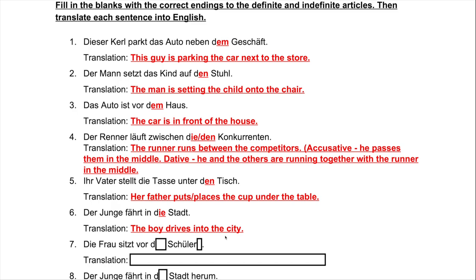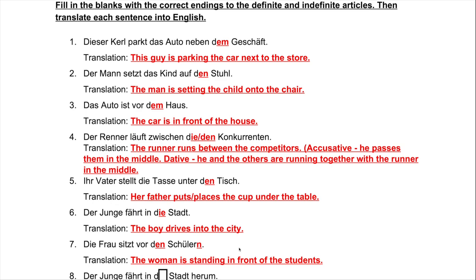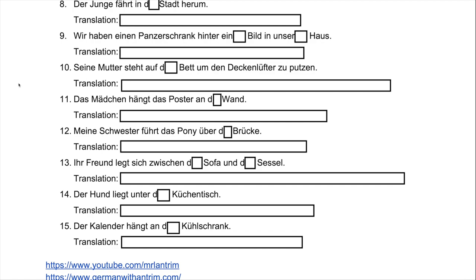'Die Frau sitzt vor ___ ___.' 'Sitzen' indicates we are not going anywhere — it is an intransitive verb and does not take a direct object. The woman is sitting in a particular location, not going somewhere. So the woman sits in front of the students. 'Schüler' is plural and dative, so we use 'den Schülern.' Answer: 'Die Frau sitzt vor den Schülern.' Note: the answer key says 'standing,' but 'sitzen' is the verb here, so that will need to be corrected on the website version.